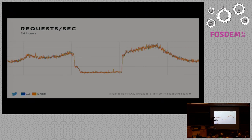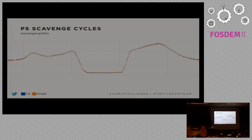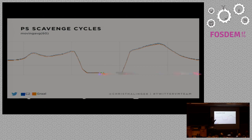The graphs show blue for C2 and orange for Graal — you can see they receive the same requests throughout the day. I picked this snapshot because it has pretty high load and then a plateau with low load, which is a good example to see the difference between high and low load. Most graphs use a moving average — this one uses 60 minutes — to make it easier to see what's happening. These show the scavenge cycles.